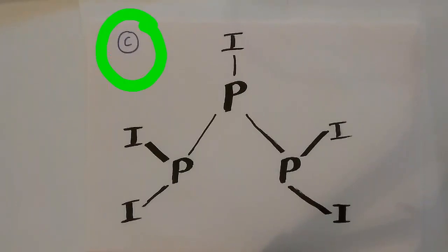In option C, there is a C2 axis and a plane of symmetry. So, these two phosphorus atoms are equivalent and will give one signal. This phosphorus will give the second signal.